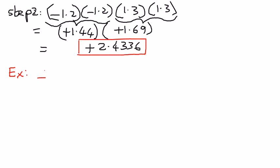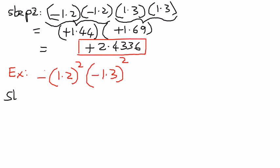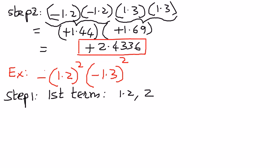This time, the negative sign is outside: negative of 1.2 raised to the power of 2. And for the second term, we have the negative sign inside the parenthesis — negative 1.3 — the whole thing raised to the power of 2. We break it down into steps. For the first term, the base term is 1.2 and the exponential term is 2, because the negative sign is outside the parenthesis. For the second term, the base term is negative 1.3 because the negative sign is inside the parenthesis, and the exponential term is 2.